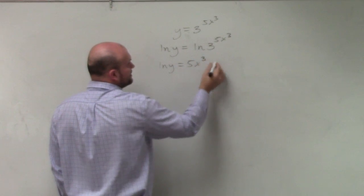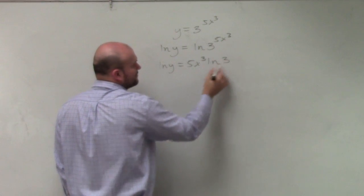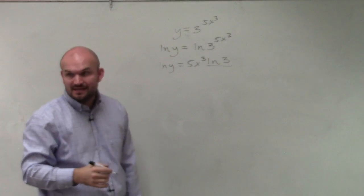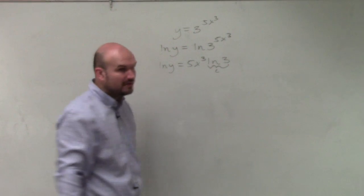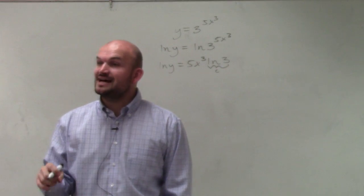So that's my power. So I can bring that 5x³ in front, and then I have ln of 3. Which, remember, ln of 3 is a constant, right?